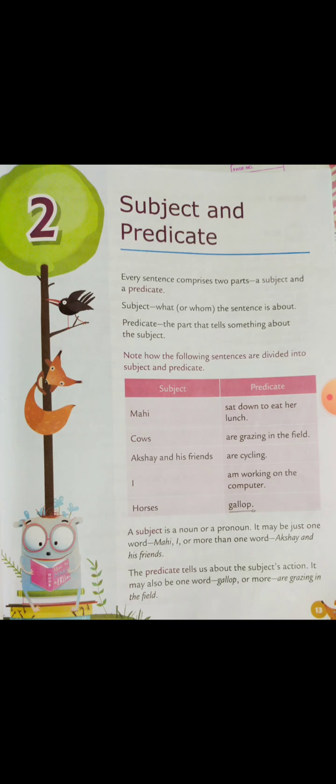For whom are we talking about? The boys. And what are the boys doing? They are running. So 'are running' is the predicate and 'the boys' is the subject. For example, 'Cows are grazing in the field' — the subject is 'cows' and the predicate is 'are grazing in the field.'